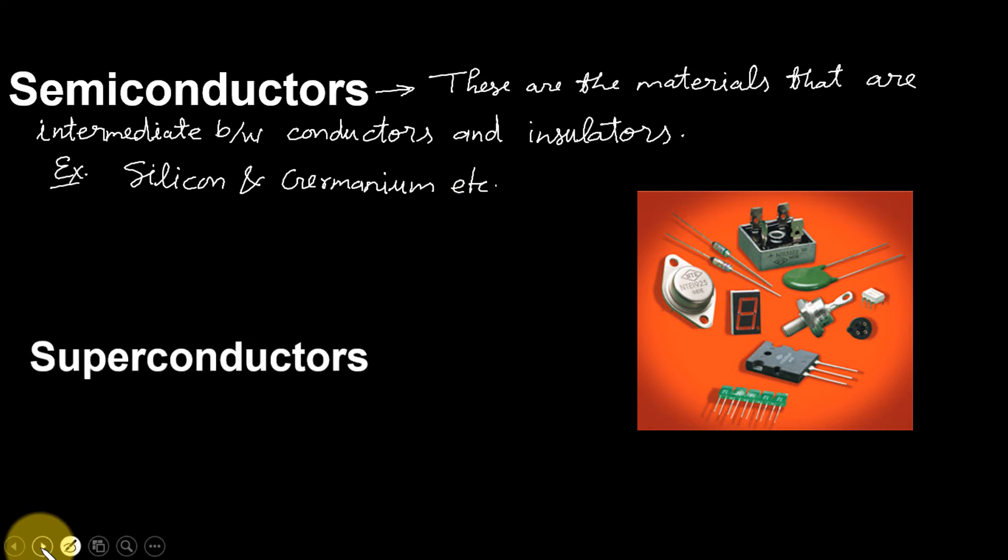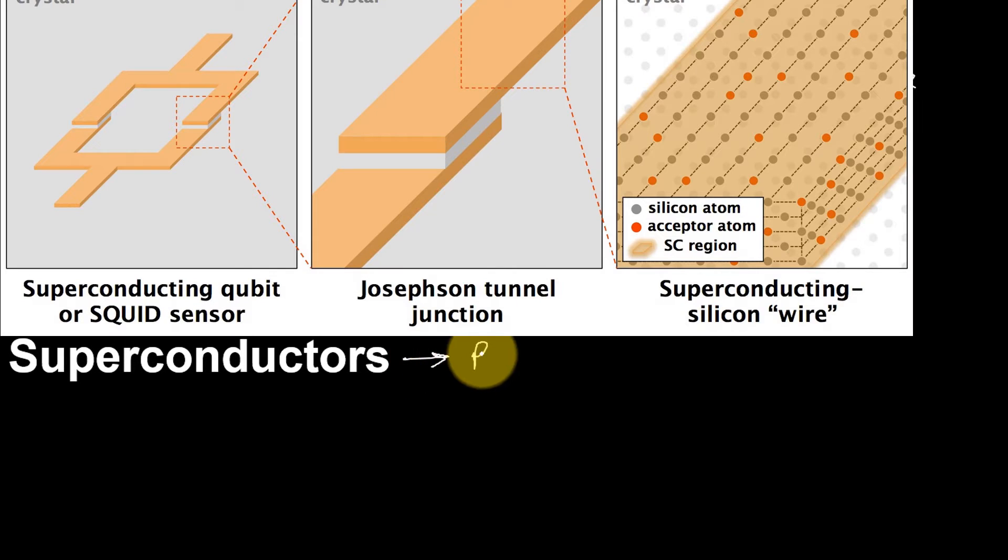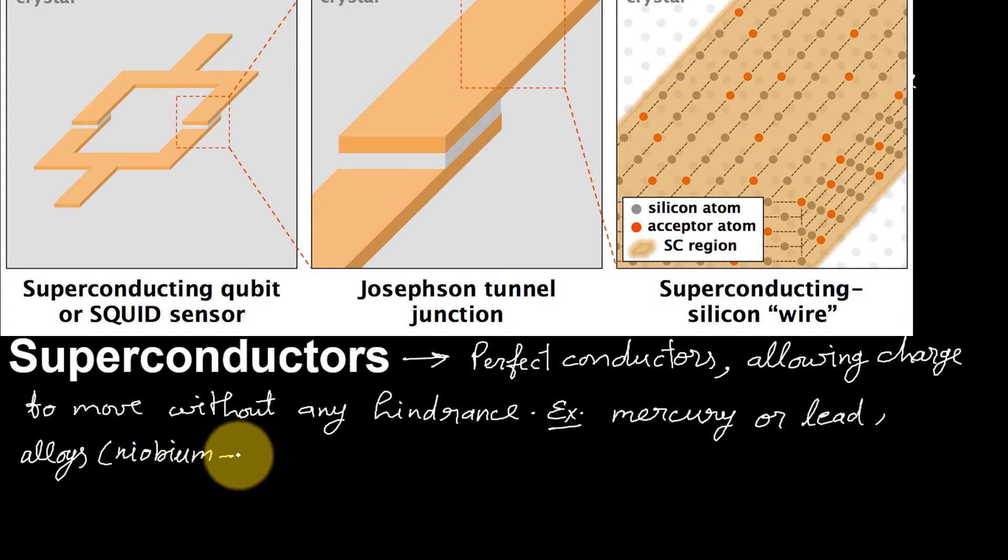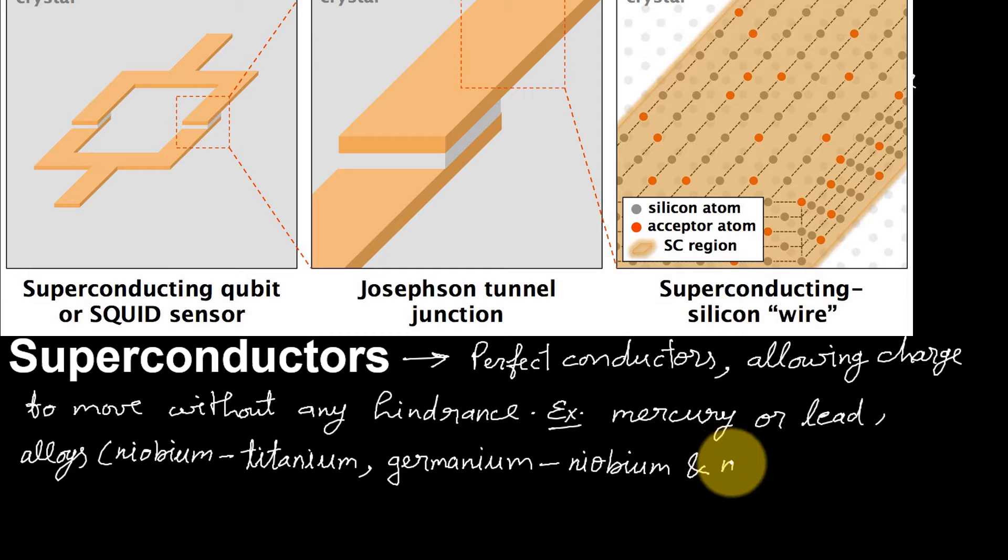Fourth is superconductors. These are the materials that are perfect conductors allowing charge to flow without any hindrance. Examples are mercury or lead, alloys, for example niobium, titanium, germanium, niobium, nitride etc.